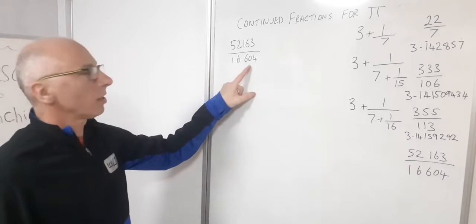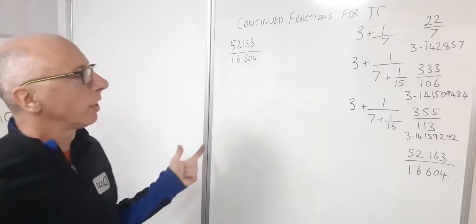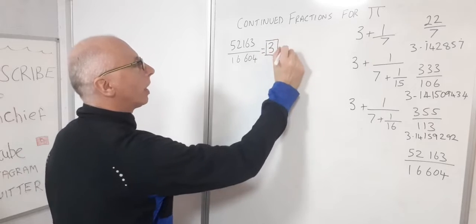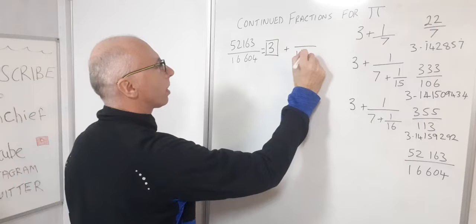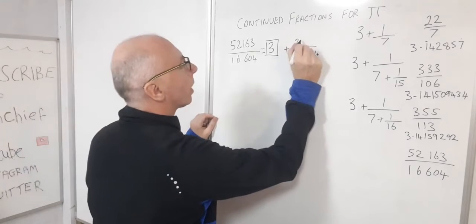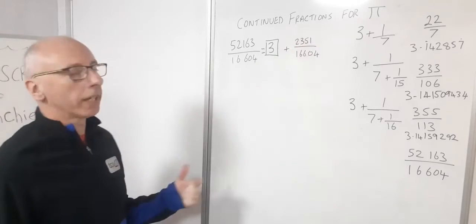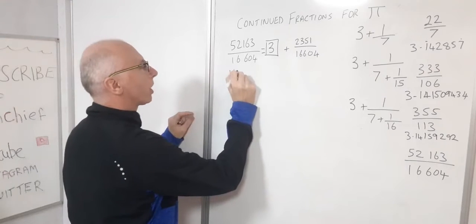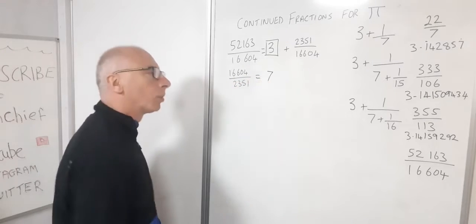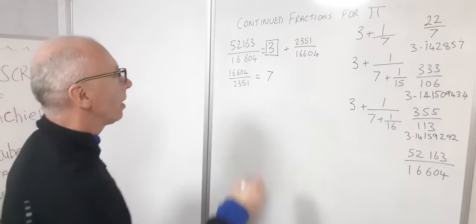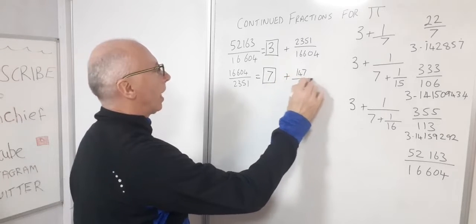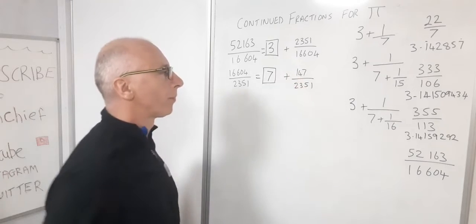Now let's have a look at this one. 52163 divided by 16604. Let's set that up as a continued fraction. So we know it's definitely going to be a 3 to start with, and then we're going to have a leftover of 16604. So if you plug that into your calculator, your first leftover is going to be 2351. Let's bring this one over here as its reciprocal. 16604 divided by 2351, so that equals 7. Plug that into your calculator, that's your first integer there, so put that in a box, and then our remainder will give us 147 out of 2351.